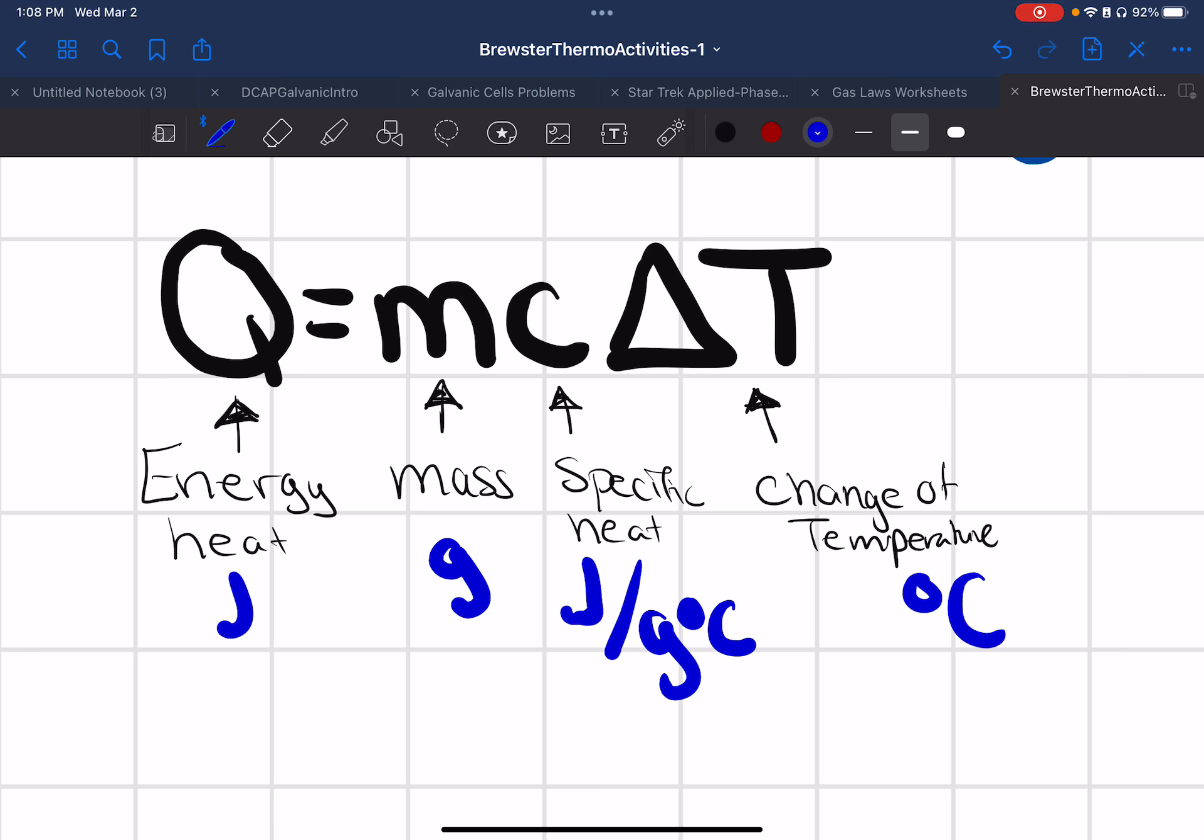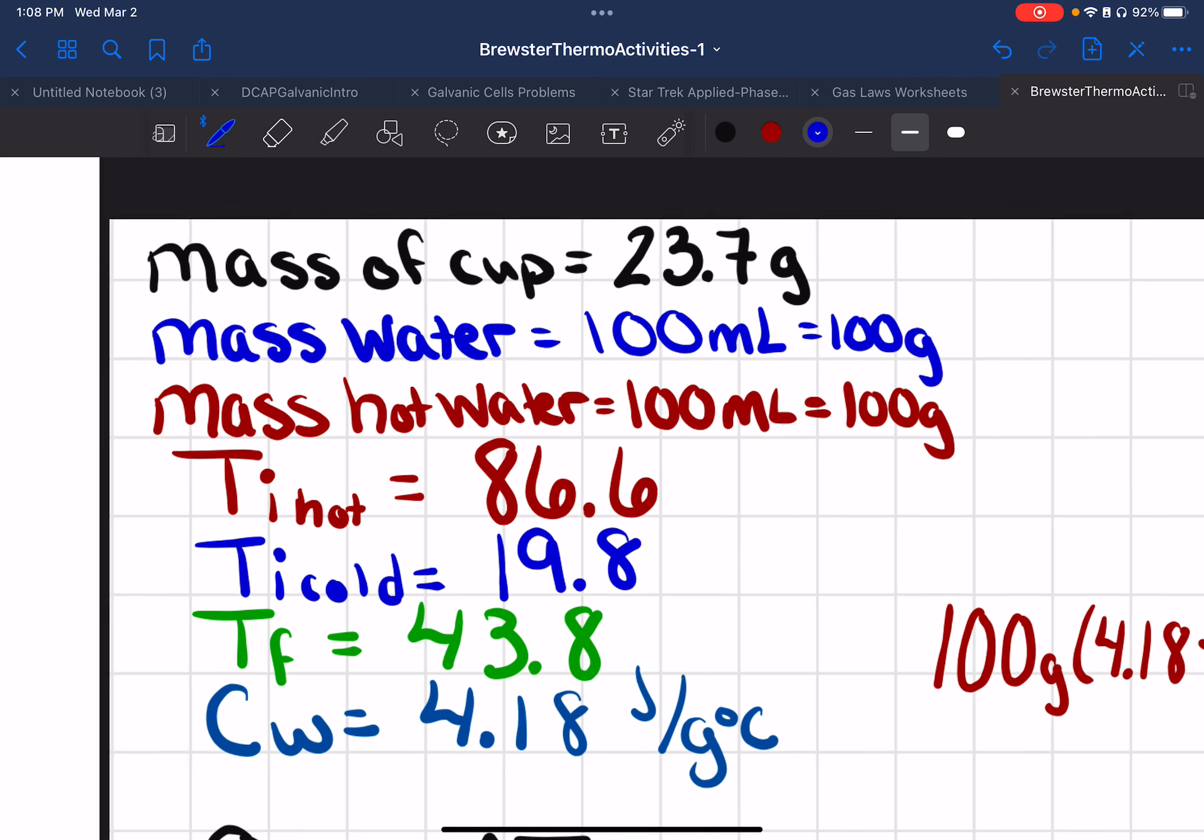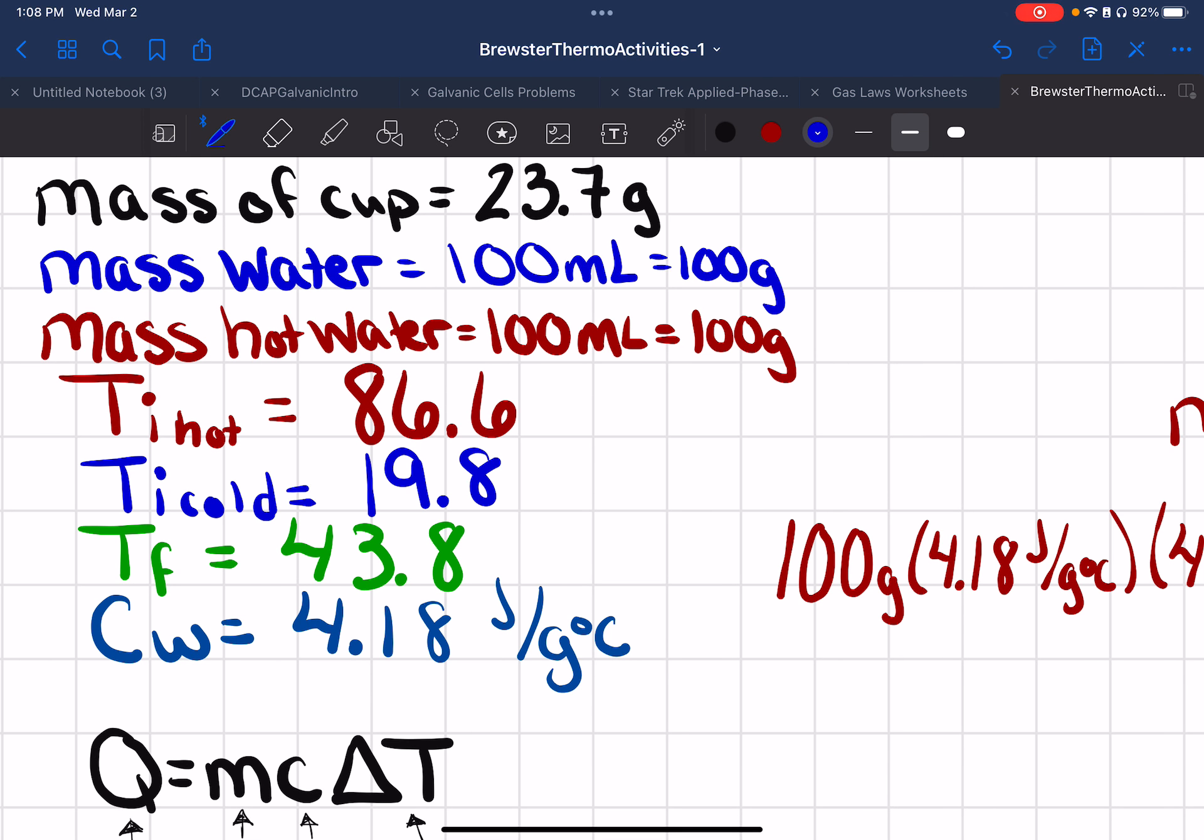Okay, so that's our base equation we're working off of. The data that you should have gotten yesterday with your lab is the mass of the cup. You should have weighed that. The mass of the water. So if you have 100 milliliters of water, you have 100 grams. The mass of the hot water, which is 100 milliliters, which is also 100 grams.